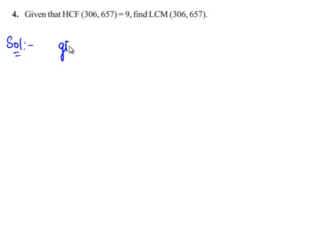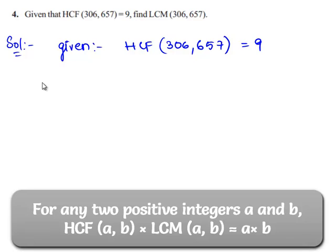So the given data is HCF of 306 and 657 is equal to 9. We have already proved that the product of HCF and LCM of any two integers is equal to the product of the two integers.